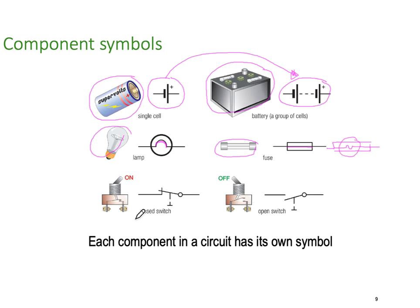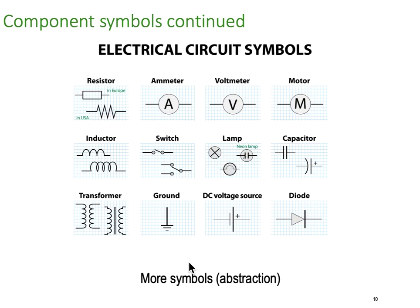A switch — if the switch is in the normally closed position you can see it's been drawn closed, or in the on position. If it's normally off it's drawn in the open position — you can see here it's drawn open. So each of the components has its own symbol or its own visual metaphor.